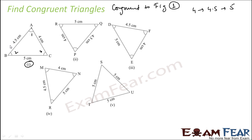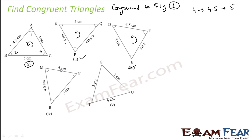We can also look at it as 4.5 and 4, or 5, 4, and 4.5. For our purposes, I've taken 4, 4.5, and 5 and I'm always moving in the anticlockwise direction. Starting here: 4, 4.5, 5 — that matches, so this triangle is congruent. Starting from the next: 4, 4.5, 5 in anticlockwise direction — that is also congruent.